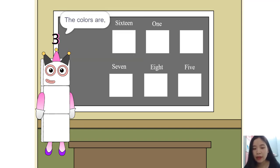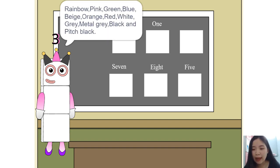You will all start at white. The colors are rainbow, pink, green, blue, beige, orange, red, white, gray, metal gray, black, and pitch black.